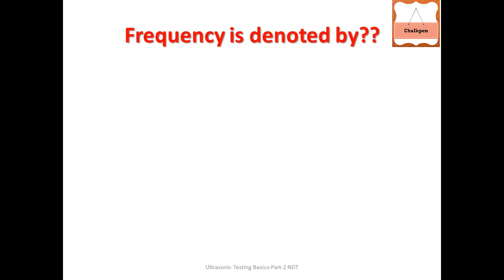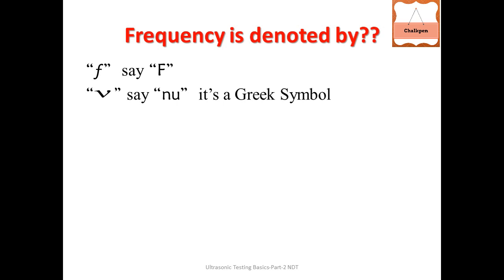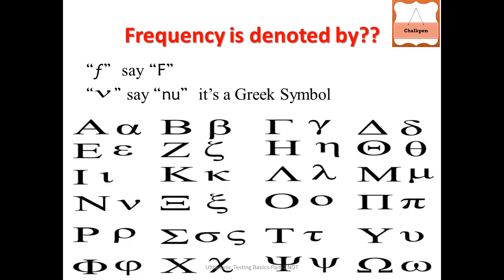Frequency is denoted by 'f'. Isko Greek symbol nu (ν) se bhi denote karte hain. Greek alphabet mein: alpha, beta... aur yahan nu (ν) hai jo 'v' jaisa dikhta hai lekin yeh 'new' (nu) hai.